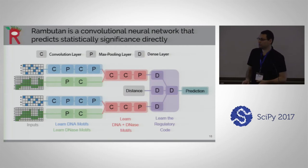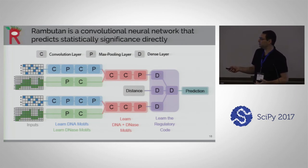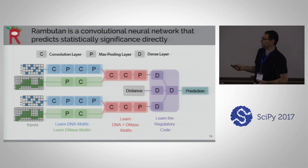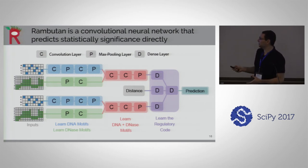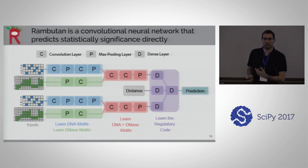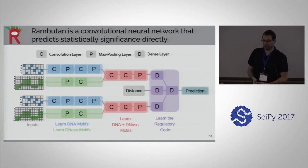The resulting neural network takes in DNA and DNase from two regions of the genome. We process the DNA to identify relevant motifs, process the DNase to identify relevant motifs, then combine them to learn motifs of both DNA and DNase together. We combine that with the genomic distance, which we have to account for given how strong that effect is. We do some more processing — essentially learning the regulatory code — and then predict whether or not this is a statistically significant contact.